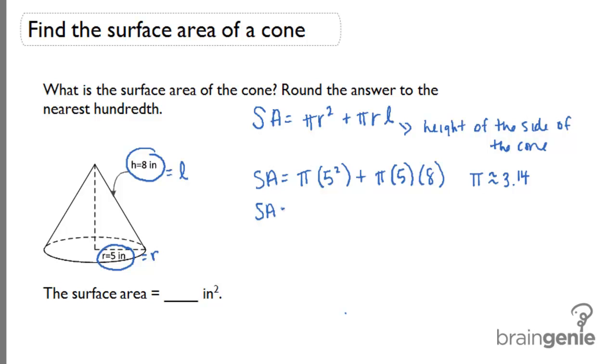So the surface area equals 3.14 times 25 plus 3.14 times 5 times 8 is 40. And if we multiply and do the addition, we'll get 3.14 times 25 plus 3.14 times 40. And we get a surface area of 204.10 inches squared.